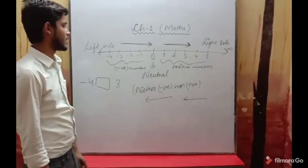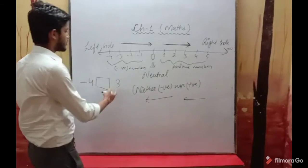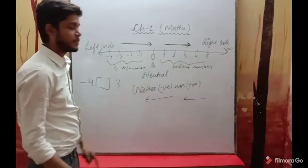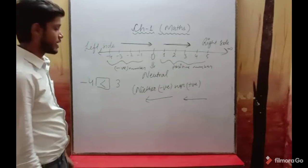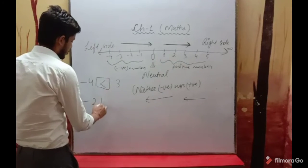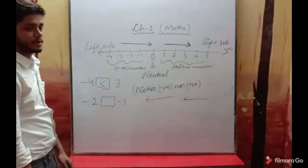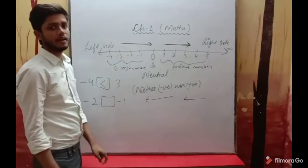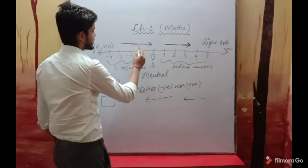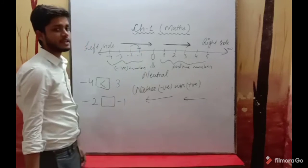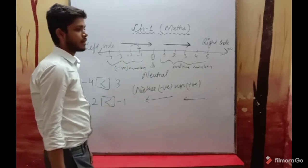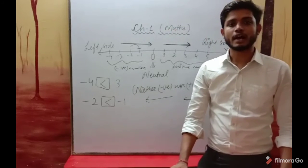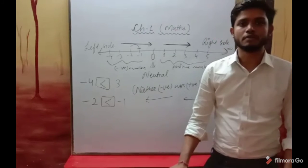If we move to the left side on the number line, numbers become smaller. So if we look at minus 4 and 3, the number 3 is greater. And between minus 2 and minus 1, minus 1 is greater because it is to the right side.